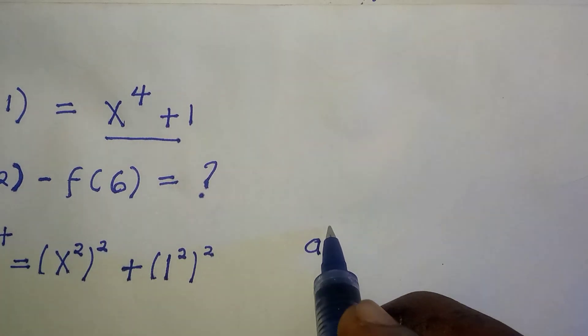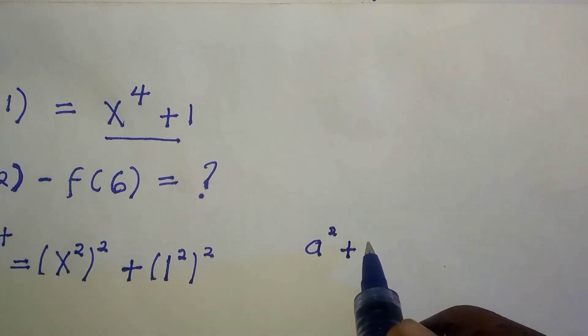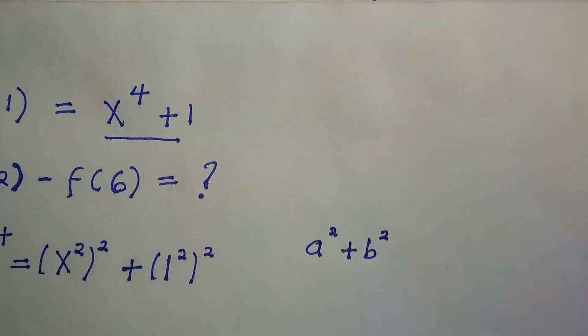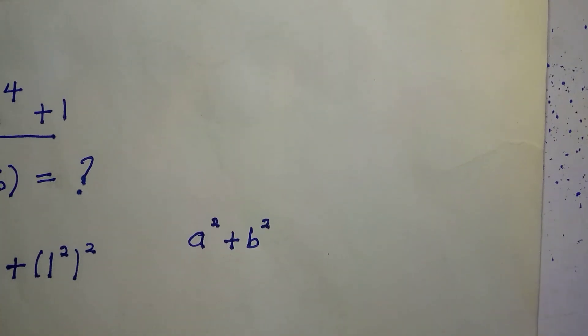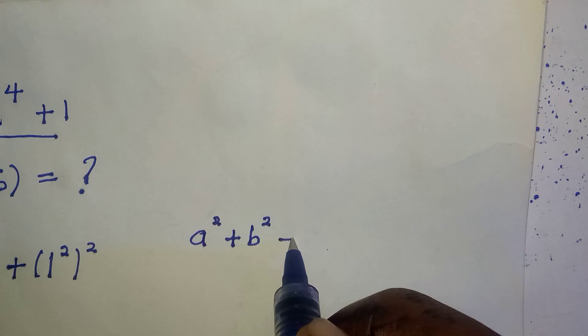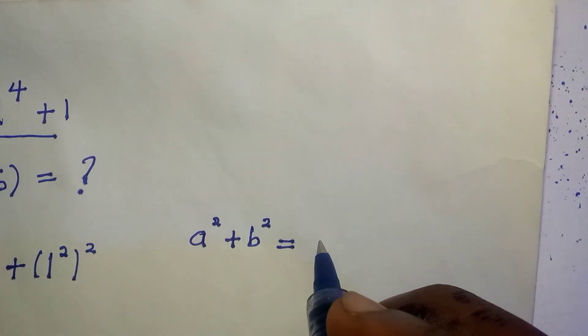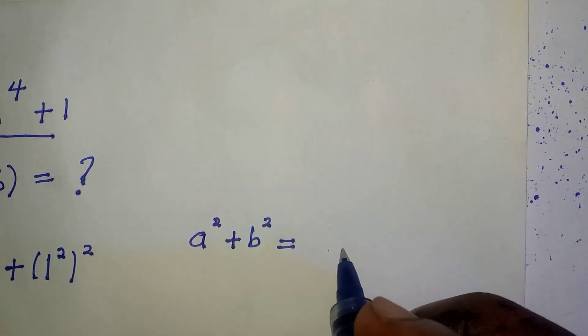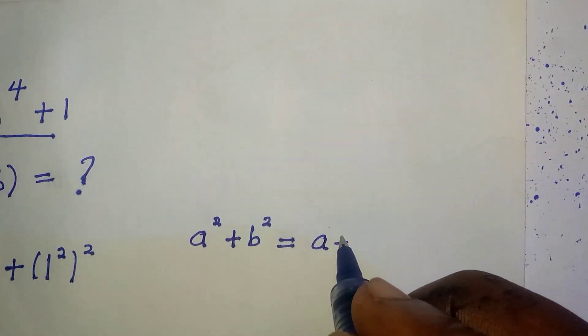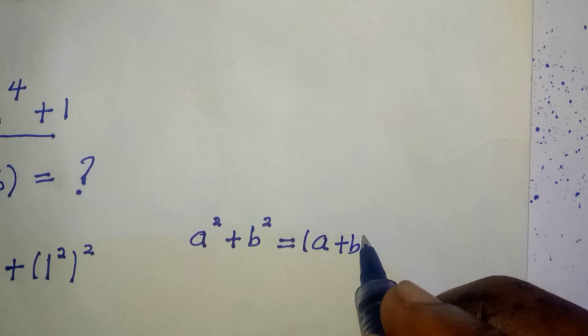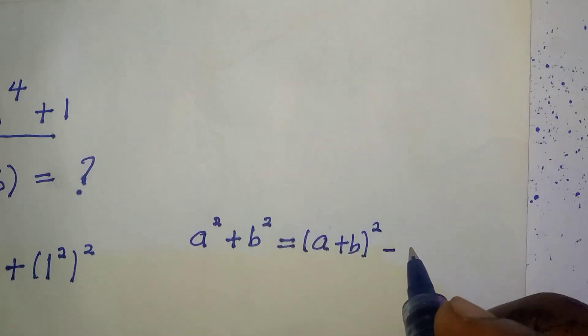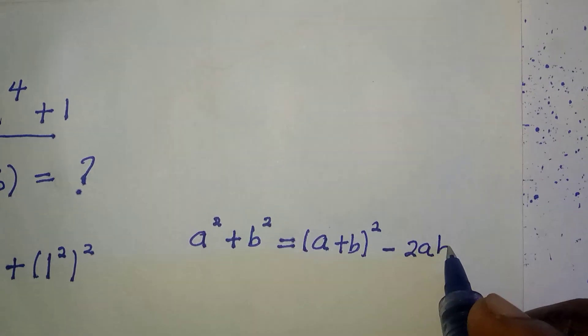If you consider the identity for the sum of two squares, if you have a² plus b², this identity has an output which is (a + b)² minus 2ab.